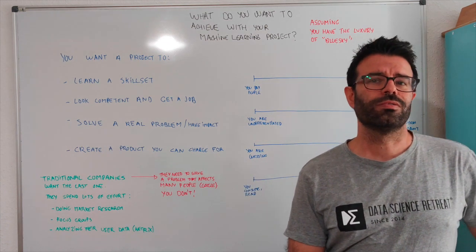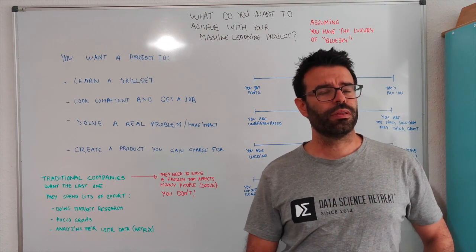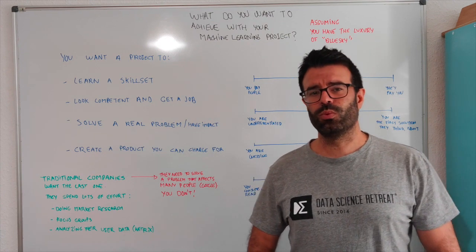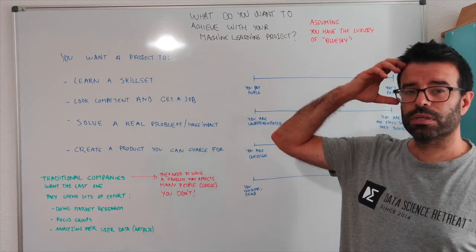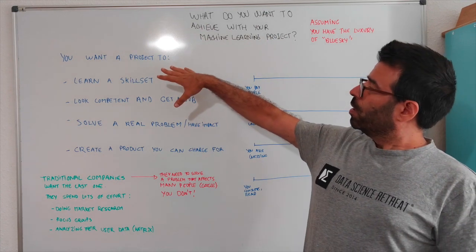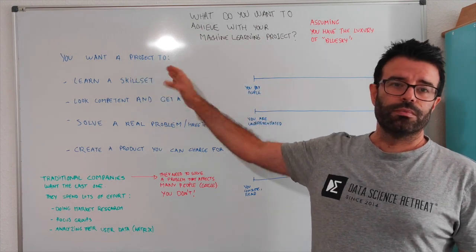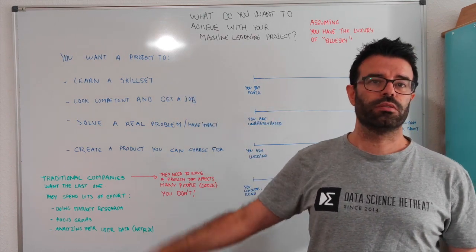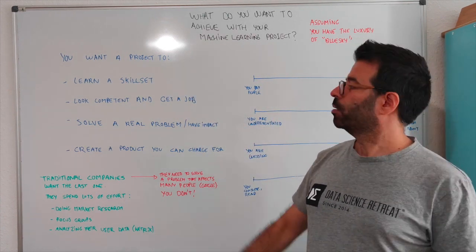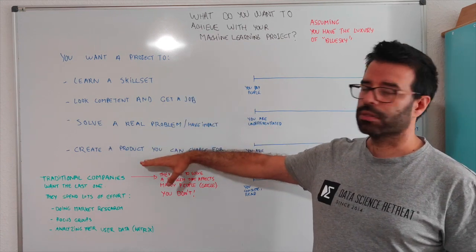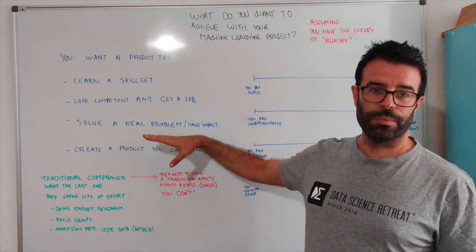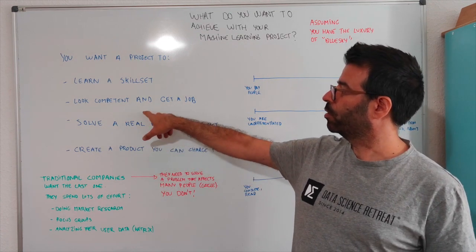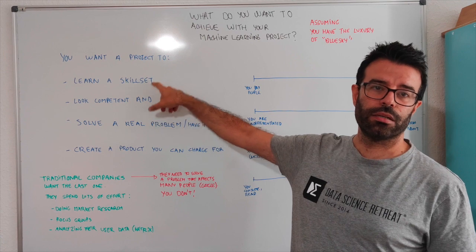People all care about having projects, having something to show, but there are different levels. This is something that I really want to go deeper. So you want a project and most people only want to learn a skill set with that project, which is fine. It's a perfectly fine goal to have, but there are different levels here. And I think my point about this video is that you should go for the last one because if you fail, you're going to have kind of a fall back on one of the others.